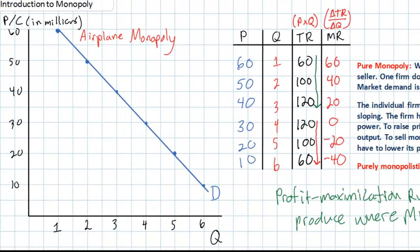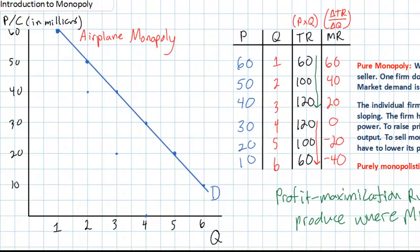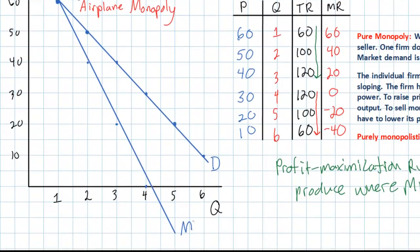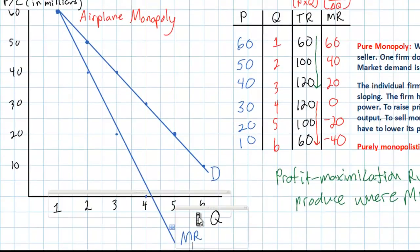If we plot the points from the marginal revenue table, we get the marginal revenue curve. At the first unit of output, marginal revenue equals the price, but as output increases marginal revenue falls more rapidly than price. At the fourth unit of output, marginal revenue equals zero, and then becomes negative. Connecting these points gives us the marginal revenue curve, which lies below the demand curve.